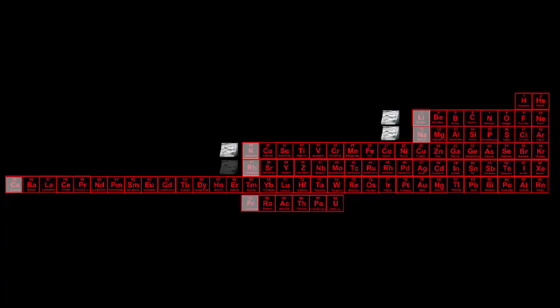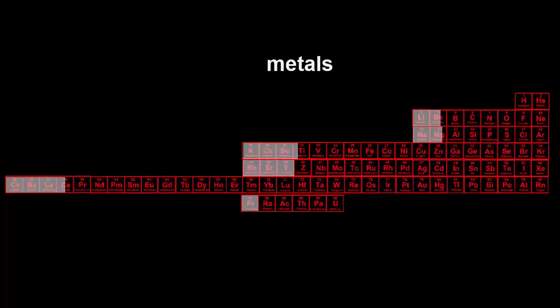Each element after the inert gas is a soft shiny metal and starts the next row. Then from left to right, all rows except the first one repeat the same pattern. They start with metals on the left.